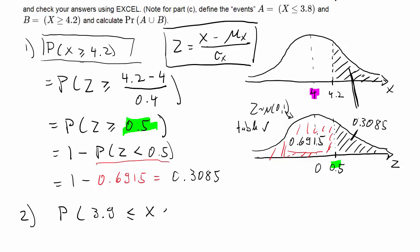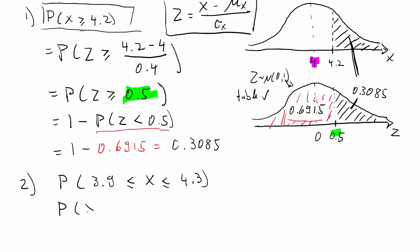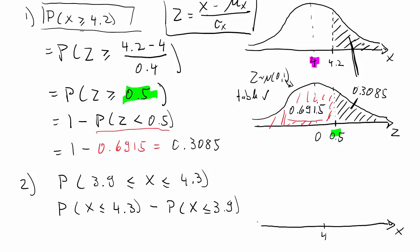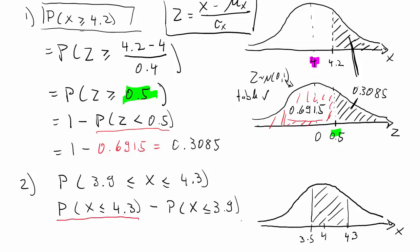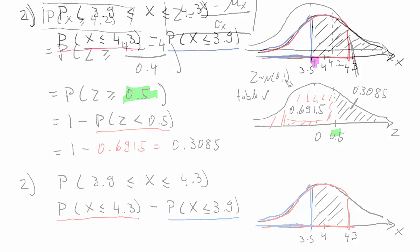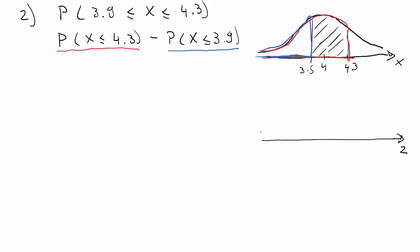Problem number two: we want to know the probability that x is larger than 3.9 but smaller than 4.3. We need to translate this into smaller-than type probabilities to use tables. We mark 3.9 and 4.3 on our sketch. The probability between these two values is obtained by taking the probability that x is smaller than 4.3 and subtracting the probability that x is smaller than 3.9, leaving us with the probability in between.